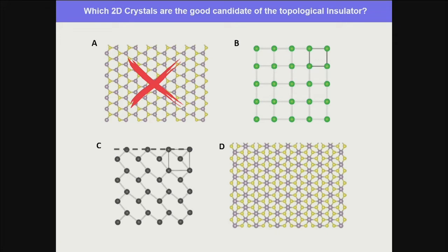Going back to the first question: which of these crystal structures is potentially a 2D topological insulator? We already know the honeycomb lattice with different atoms on each sublattice is NOT a good candidate, because introducing a sigma_z term with constant m breaks inversion symmetry — this is exactly the staggered graphene scenario where the two sublattices have different energies, which is too large a perturbation. This is realizing staggered graphene, and it's not a topological insulator.